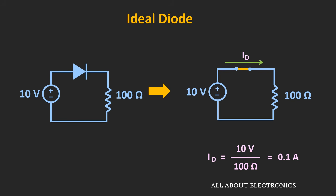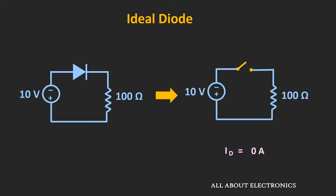Let's take a simple example where the diode is connected in series with a voltage source and a resistor, assuming the diode is ideal. When the applied voltage across the anode and cathode is 10V (positive), it is represented by a closed switch, and the current through the 100Ω resistor is 10V ÷ 100Ω = 0.1A. If we instead apply –10V, the applied voltage is negative, so the diode acts as an open switch and the current through the circuit is 0A.